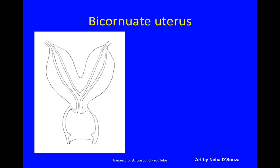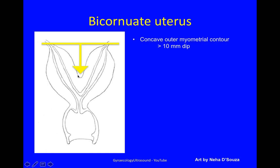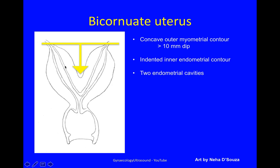In a bicornuate uterus, you have a concave outer myometrial contour with a more than 10mm dip. You measure that by drawing a horizontal line between the two interstitial portions of the fallopian tube and then measuring down to the dip — if this is more than 10mm, it's a bicornuate uterus. An indented inner endometrial contour, two endometrial cavities, and two interstitial portions of the fallopian tube.